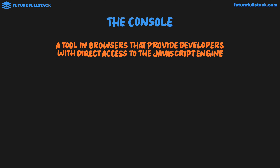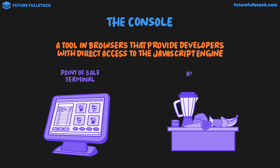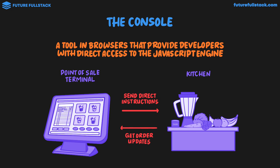In our juice bar analogy, when you order a juice, the person working in the juice bar has a point-of-sale terminal, which is a way they can interact with the kitchen. Using the point-of-sale terminal, they can send direct instructions to the kitchen, and they can also get order updates from the kitchen. So the person standing in front of the point-of-sale terminal doesn't access the kitchen directly, but they're able to send instructions there and get order updates.